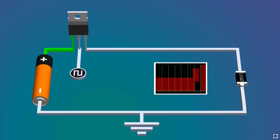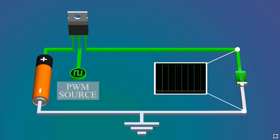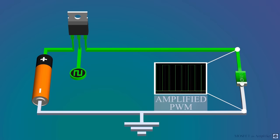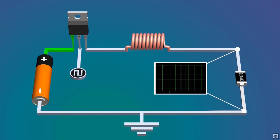We have reduced the voltage from 12 volts to 6 volts with just a switch. For efficiency reasons we will replace it with an electrical switch or a MOSFET. This MOSFET is controlled by a PWM signal. How the PWM is generated and controlled will be explained later in the video, but this is just the amplified PWM signal and it has high voltage peaks.